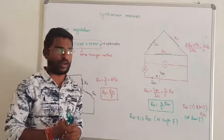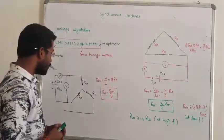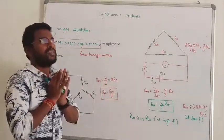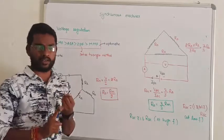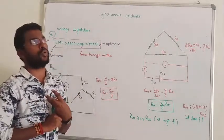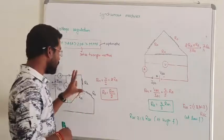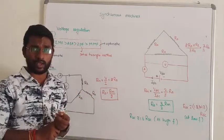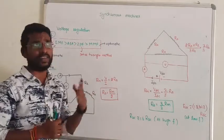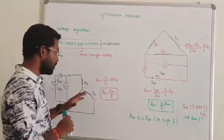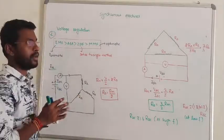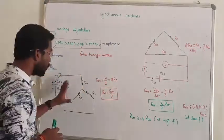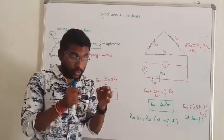If there is a star-connected machine, we can measure the resistance using DC supply. When we connect the inductor to DC, the inductive reactance drops out, so we are able to measure only the value of the pure resistance.